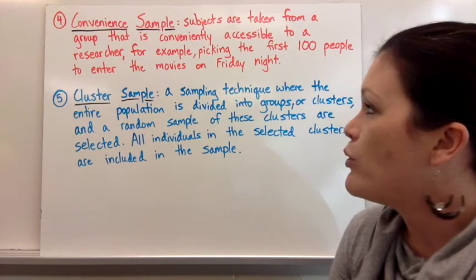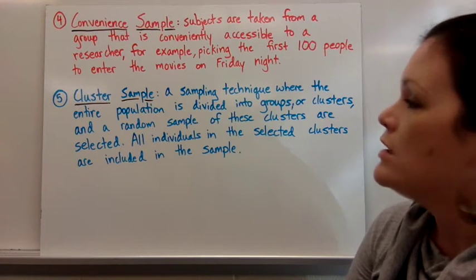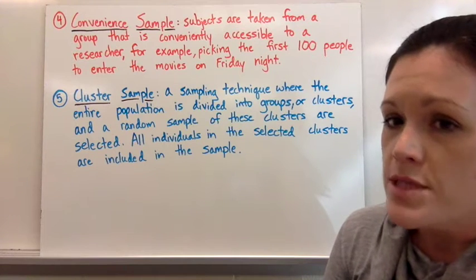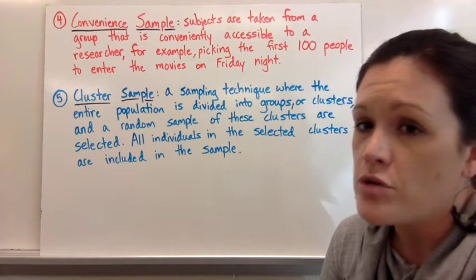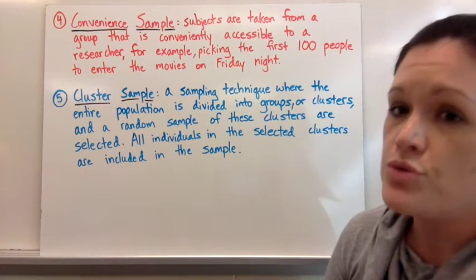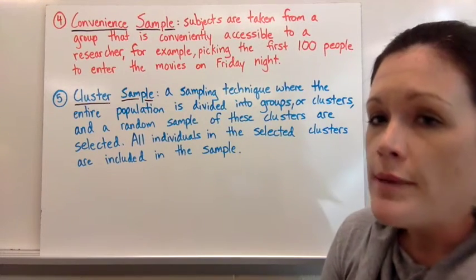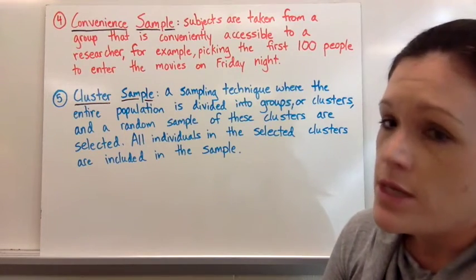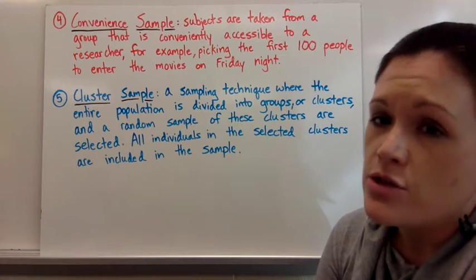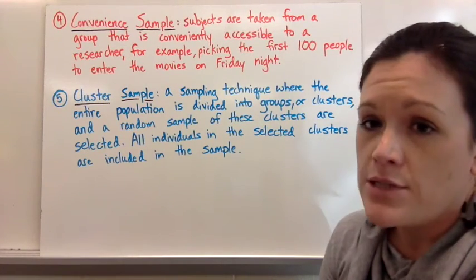The last type is a cluster sample, where the entire population is divided into groups or clusters and a random sample of these clusters is selected. All individuals in the selected clusters are included in the sample. For example, if someone walked into our classroom and randomly chose two of our groups, everyone in those two groups would be included. That's a small sample — the more people you involve in a survey, the more likely you are to get accurate results.